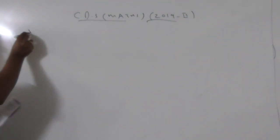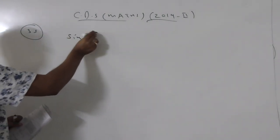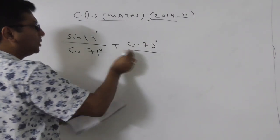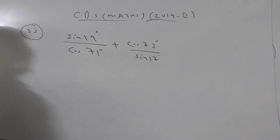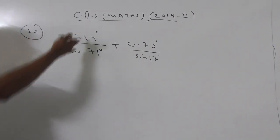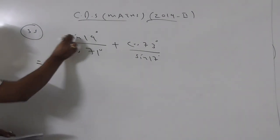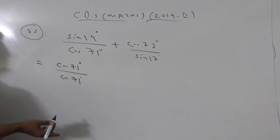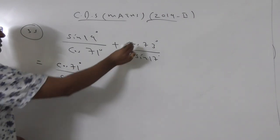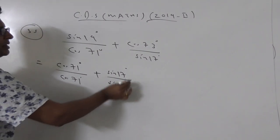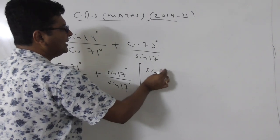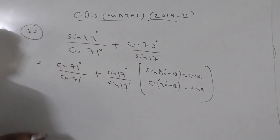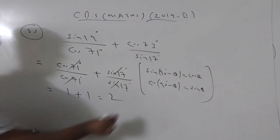Question number 35 from trigonometry is very simple. Find the value of sin19°/cos71° + cos73°/sin17°. Using the complementary angle concept: sin19° = cos71°, so the first fraction becomes cos71°/cos71° = 1. Similarly, cos73° = sin17°, so the second fraction becomes sin17°/sin17° = 1. The formula used is sin(90°-θ) = cos θ and cos(90°-θ) = sin θ. Answer = 1 + 1 = 2, which is option C.